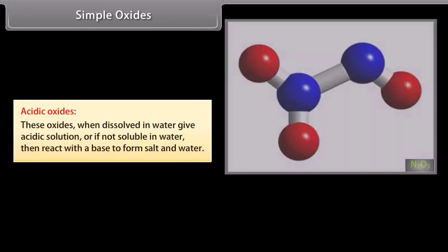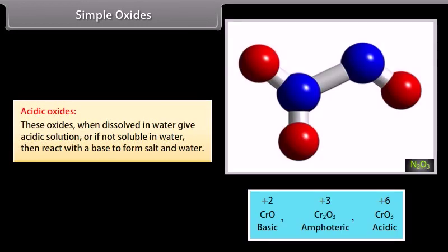Acidic oxides: These oxides when dissolved in water give acidic solution, or if not soluble in water then react with a base to form salt in water. For example, SO2, N2O3, P2O3 and Br2O. The acidity of the oxide increases as the oxidation number increases.